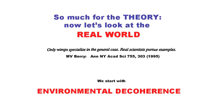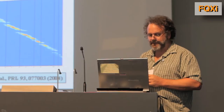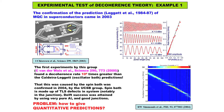This means it is not legitimate to talk about the time at which a measurement occurs, because that's simply a FAPP time, nor is it justifiable to introduce statistical operators to describe this unless you have some reason for imposing that cut. I always like this quote from Mike Berry: 'Only WIMPs specialize in the general case. Real scientists pursue examples.' So, this is the famous experiment done in 2003 in Delft.